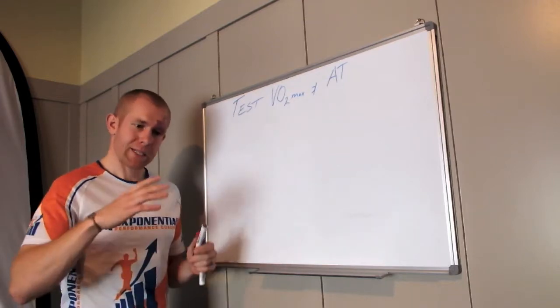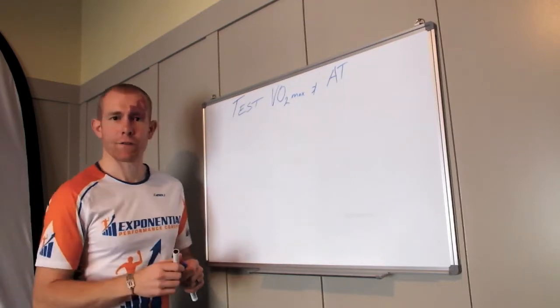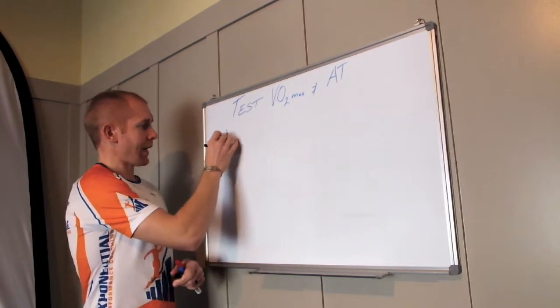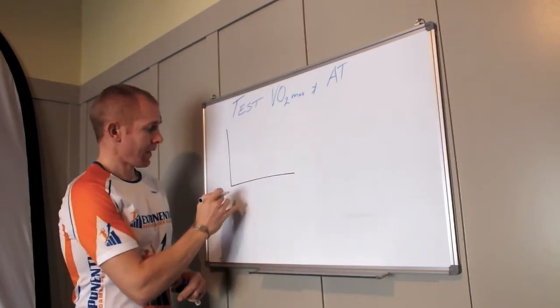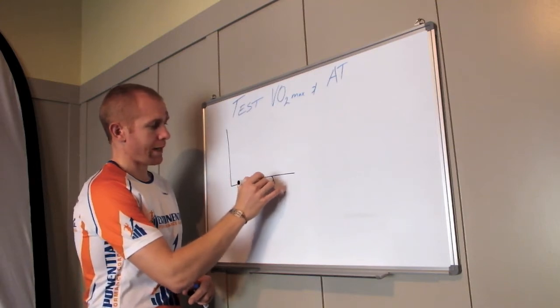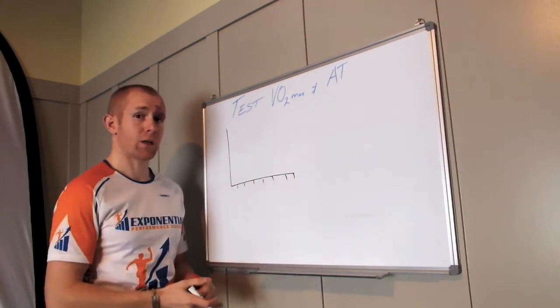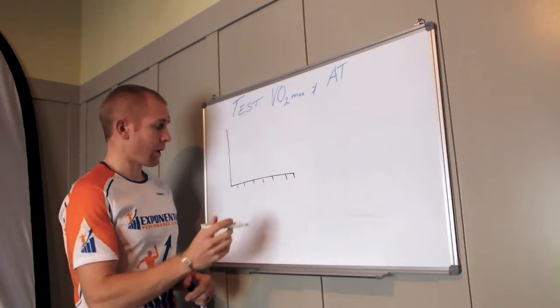Anaerobic threshold can be tested in the lab or out in the field. I'll talk you through the lab test first. We drew this graph last time—if we've got an increasing work rate along the bottom, whether it be speed on a treadmill or wattage on a bike.